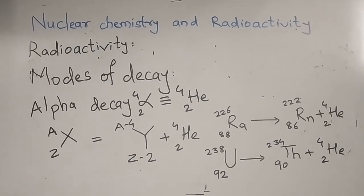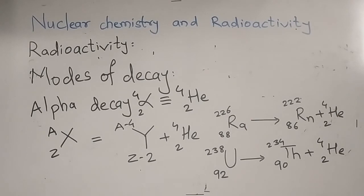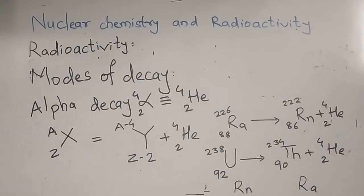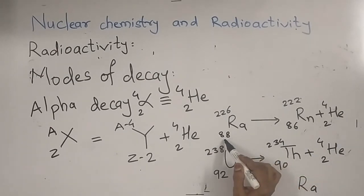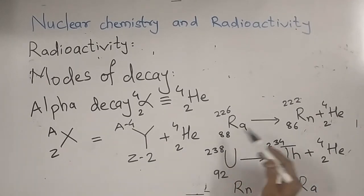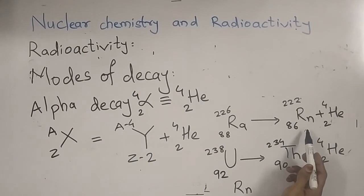Therefore in alpha decay, the daughter nucleus formed belongs to an element that occupies two places to the left in the periodic table. For example, Radon's position is two places to the left of Radium (atomic number 88 → 86). The daughter nucleus shifts two positions to the left — so it is about alpha decay.